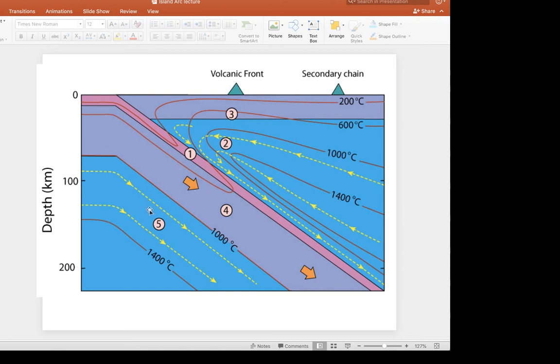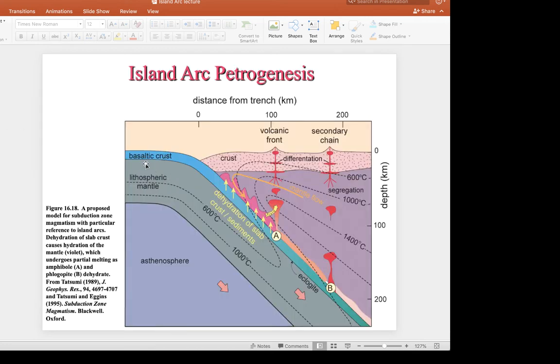So I'm going to have an assignment where you're going to interpret these isotherms, and then you're going to redraw this diagram where in place of basaltic crust and lithospheric mantle, what I want you to do is draw cross sections that it looks like an ophiolite sequence. And you'll show that ophiolite sequence going down.